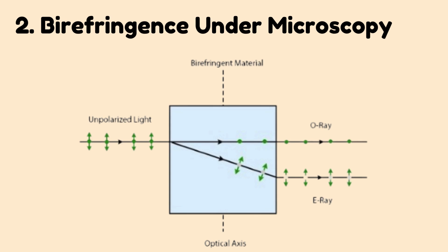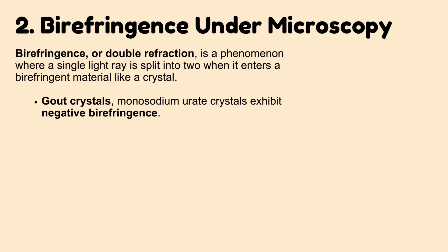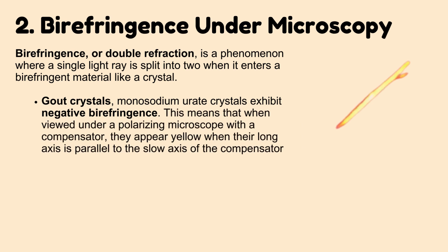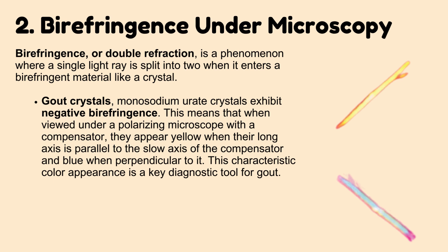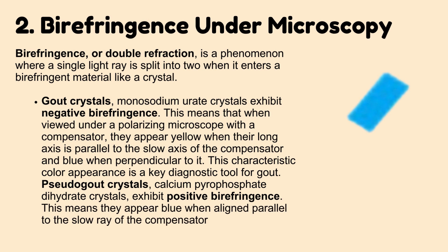Birefringence under microscopy. Birefringence, or double refraction, is a phenomenon where a single light ray is split into two when it enters a birefringent material like a crystal. Gout crystals — monosodium urate crystals — exhibit negative birefringence. When viewed under a polarizing microscope with a compensator, they appear yellow when their long axis is parallel to the slow axis of the compensator, and blue when perpendicular to it. Pseudogout crystals, calcium pyrophosphate dihydrate crystals, exhibit positive birefringence: they appear blue when aligned parallel to the slow ray of the compensator, and yellow when perpendicular to it.